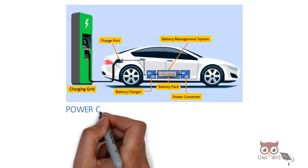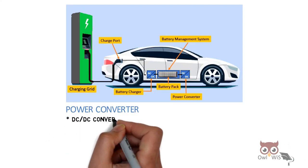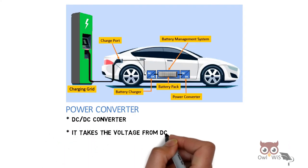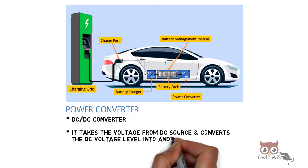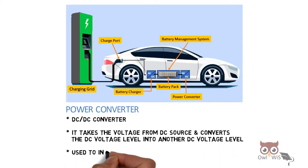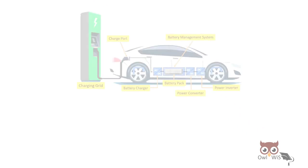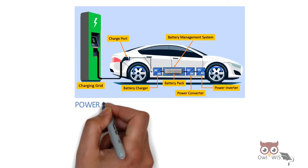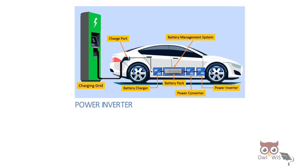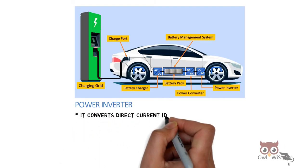Next is the power converter, present after the battery pack. It is a DC-DC converter that takes voltage from a DC source and converts the DC voltage level into another DC voltage level, used to increase or decrease voltage levels.